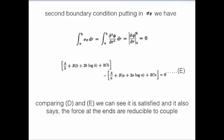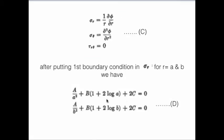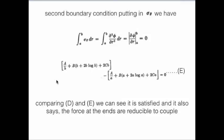Now second boundary condition: for σ_θ we are similarly doing it and after simplifying we will have this equation E. This equation E is similarly looking like the previous equation. We are having D - you can see it: A/b² + B(1 + 2 log b) + 2C. See here A/a² + B(1 + 2 log a) + 2C. Actually if we simplify this equation we will get similar equation like D. So comparing E and D we can see that it is satisfying and it also says that the force at the end are reducible to couple. Whichever forces we are applying, it's only a couple. It is again telling us that, so our boundary conditions are referring back to us, we can say like that.